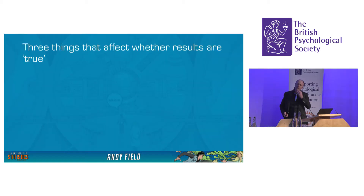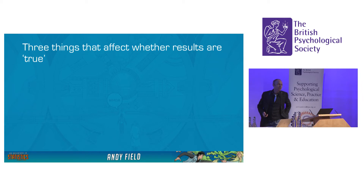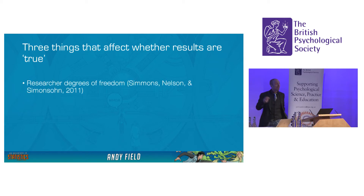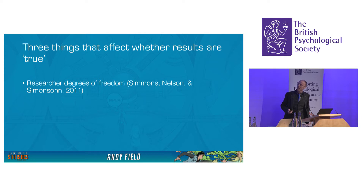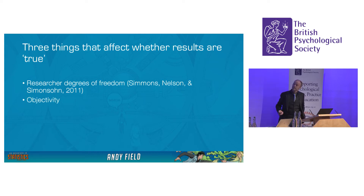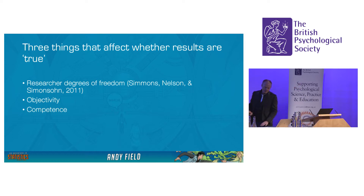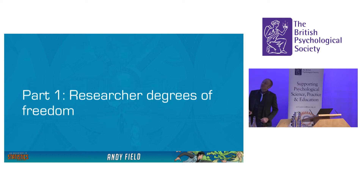So what I'm going to talk about are three things that can influence whether results are true. There are other things, but these are the things I'm going to talk about. The first are researcher degrees of freedom. The second is objectivity. And the third is competence. Starting off with researcher degrees of freedom.